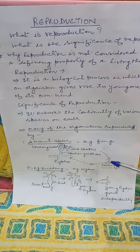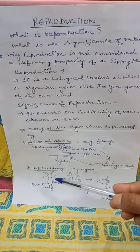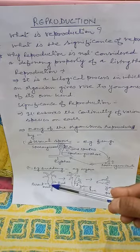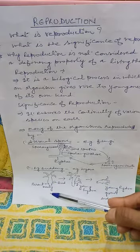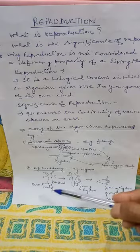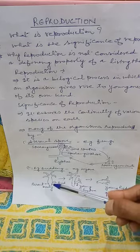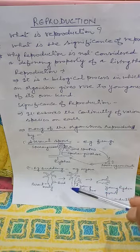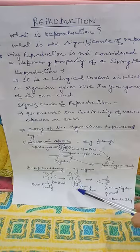The second mode of reproduction is budding. Here I have taken the example of hydra. When hydra reproduces, a small bud comes out from the body of the parent hydra and gradually develops.